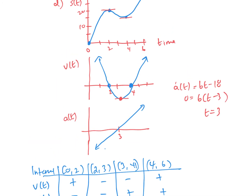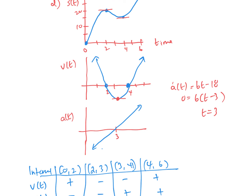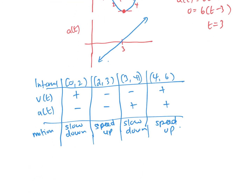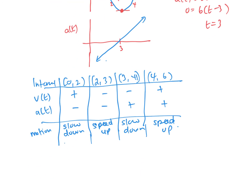I can confirm that with my graph. From zero to two, as I approach the turning point I'm going to slow down. Then I speed up to the next point. Then I slow down to get to that turning point, and then I speed up again. I'm moving forward from zero to two, backwards from two to four, and forwards after four.